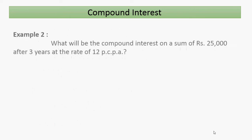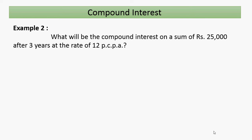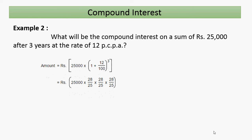Let's see another example. What will be the compound interest on a sum of rupees 25,000 after three years at the rate of twelve percent? We have three years, rate is twelve percent, and the sum is rupees 25,000. Putting it in the formula: 25,000 × (1 + 12/100)^3, which is 25,000 × (28/25)^3.